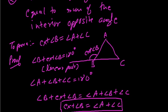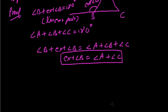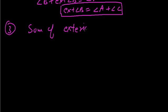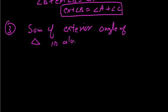So in any triangle, the exterior angle is equal to the sum of the interior opposite angles. Now the next result is that the sum of the exterior angles of a triangle is always 360 degrees.